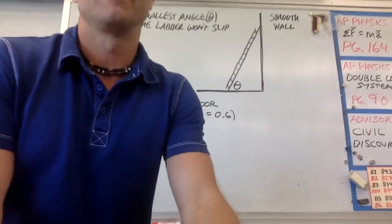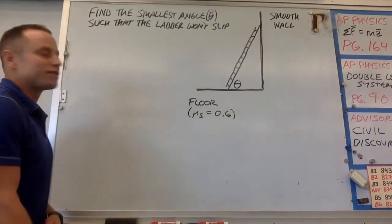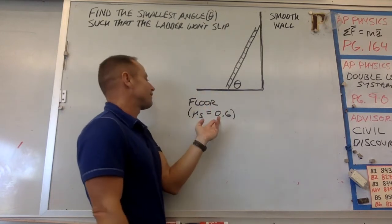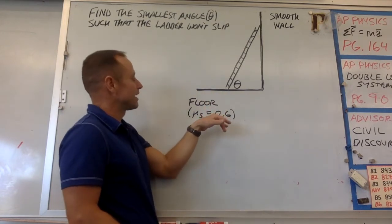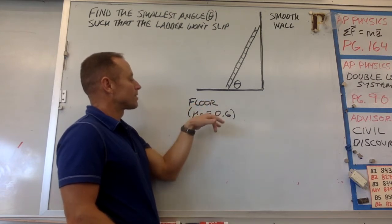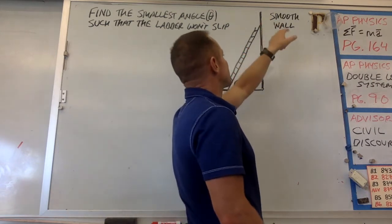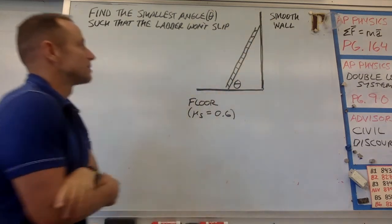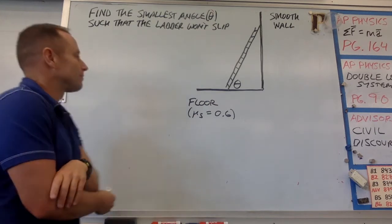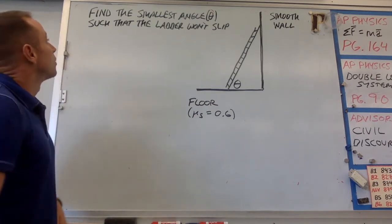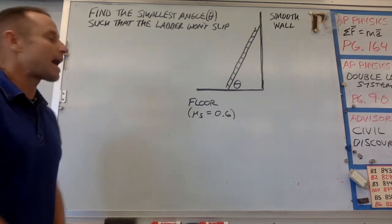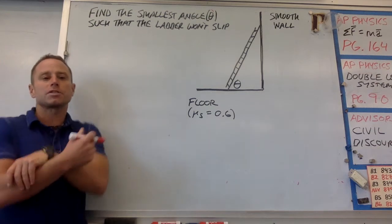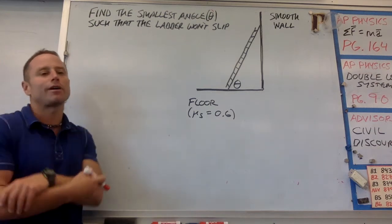This problem is a classic in freshman college physics. The idea is you have a reasonably rough floor — actually 0.6 is sort of slippery-ish, but that's okay — so you have a floor with a certain coefficient of friction. Then the wall you just take to be smooth, or you could say there's a wheel on that end of the ladder. We'll keep life simple and not have the wall contributing friction. What we want to do is find the smallest angle such that the ladder won't tip over. The way to start is to draw in the forces present in the problem.